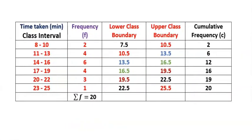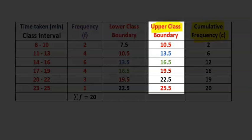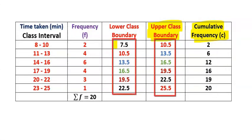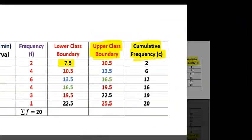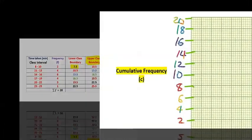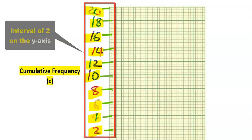Using the completed table, we are going to plot the cumulative frequency on the y-axis and the upper class boundary on the x-axis. Our lowest point will be 7.5. The lowest value in the cumulative frequency is 2 and the highest value is 20. On the y-axis we have 2, 4, 6, 8, 10, 12, 14, 16, 18, and 20.